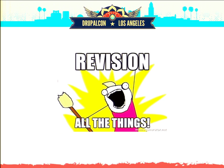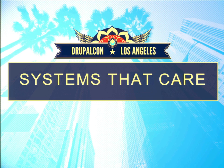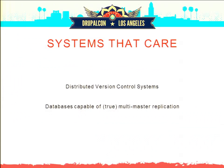Before we just go and revision all the things, let's talk about systems that do care — how other systems have solved this problem. Systems that care a lot about your data and just don't want to lose it. I'm going to look at two types of systems: distributed version control systems, and databases capable of true multi-master replication.